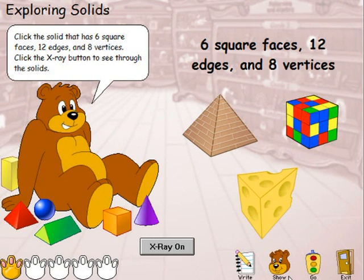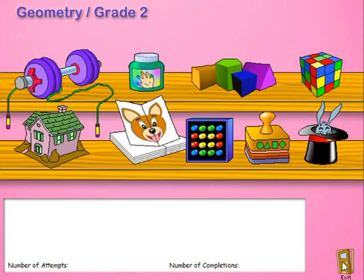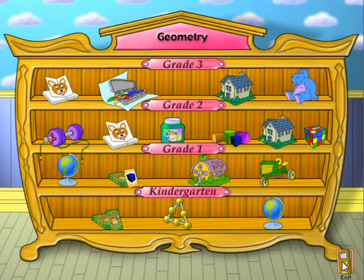So this is more or less how the activities work. Under the different strands, we select a toy display, we select our toy, and we do the toy accordingly with feedback from the bear.